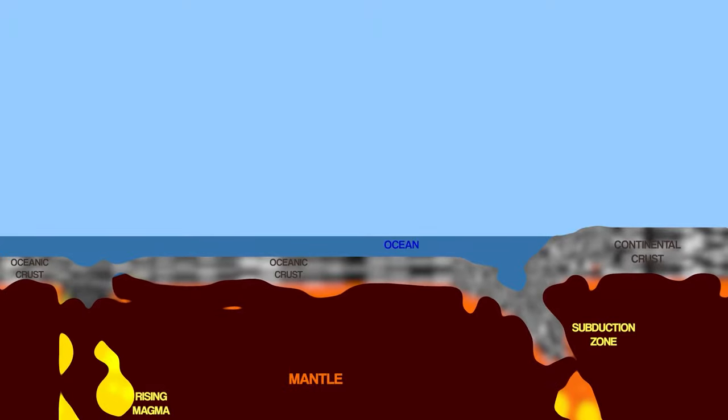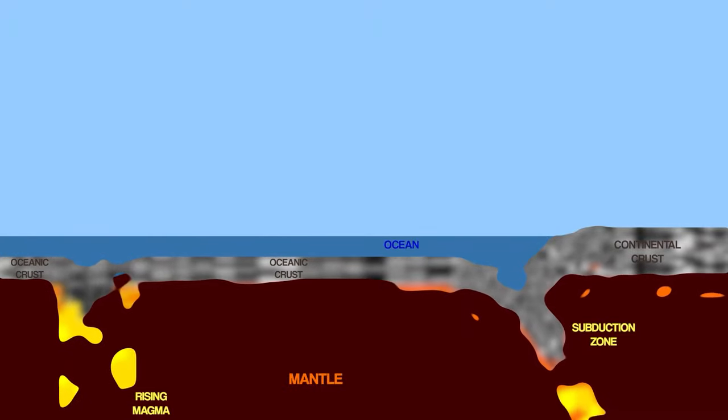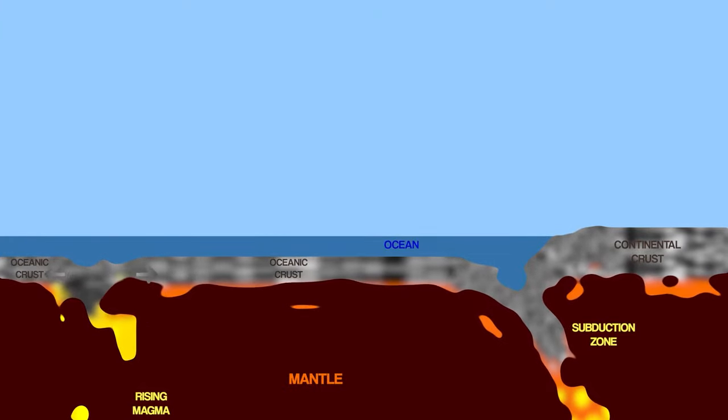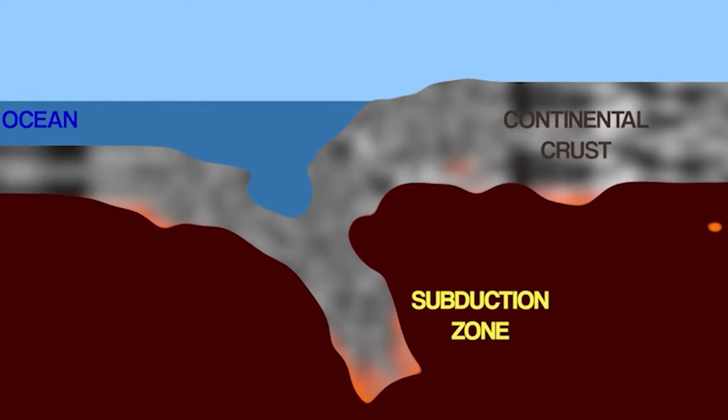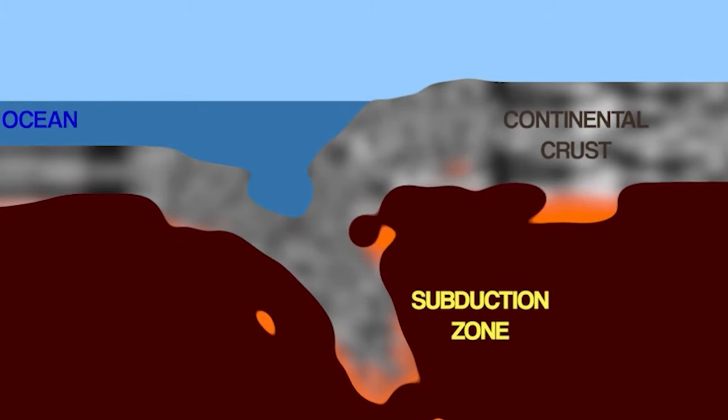Destructive, sometimes also called convergent boundaries, are areas where tectonic plates are being carried towards each other. But there are actually two different types. If an oceanic plate is moving towards a continental plate, the oceanic plate is forced underneath because it is denser, in a process we call subduction.